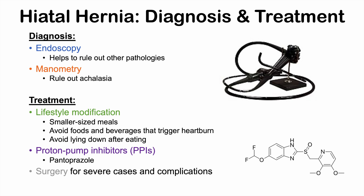In severe cases of hiatal hernia, surgery is utilized. There are a large list of surgeries that can be performed, and these are oftentimes used for the less common types — types 2, 3, and 4. If you want to learn more about signs and symptoms of gastroesophageal reflux disease, please check the lesson on that topic. Please like and subscribe for more lessons like this one. Thanks so much for watching and hope to see you next time.